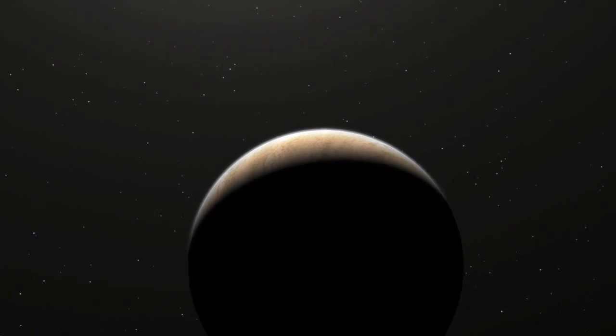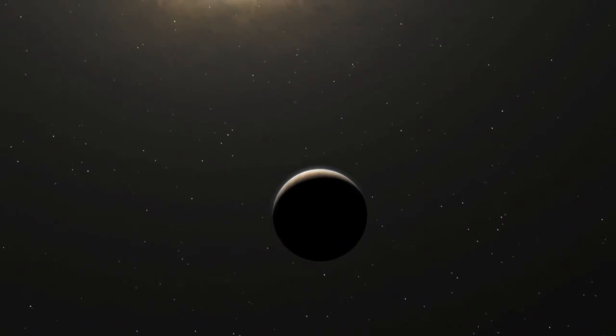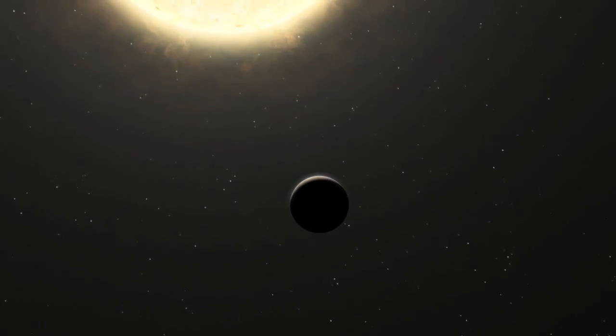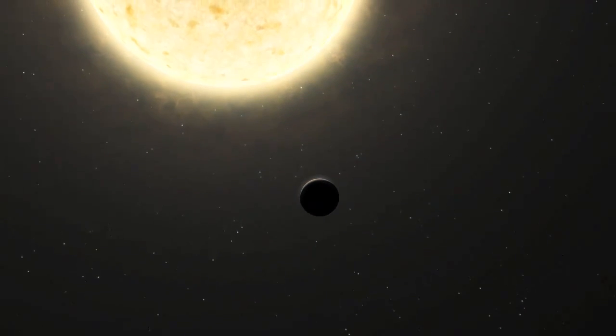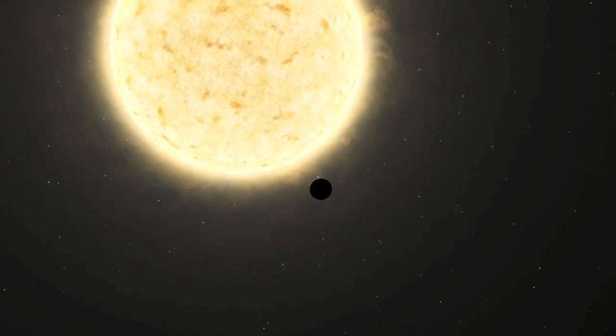The Jupiter-like planet is particularly unusual as it is orbiting a star nearing the end of its life and could be about to be engulfed by it, giving tantalizing clues about the fate of our own planetary system in the distant future.